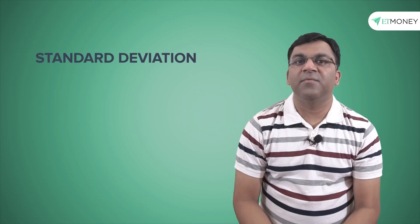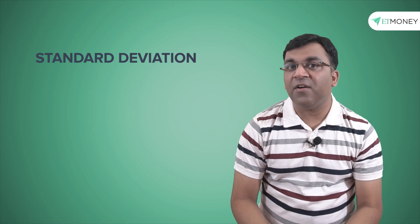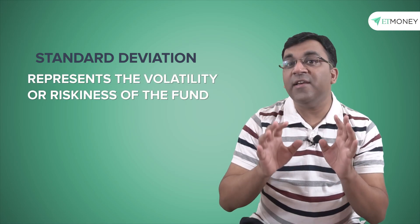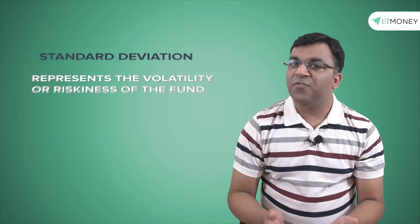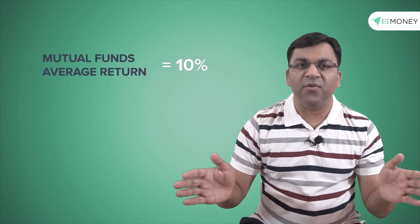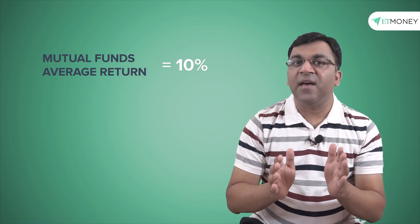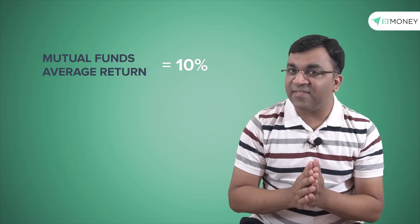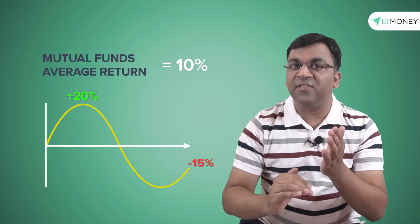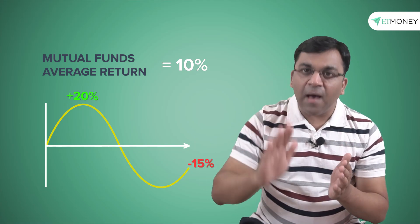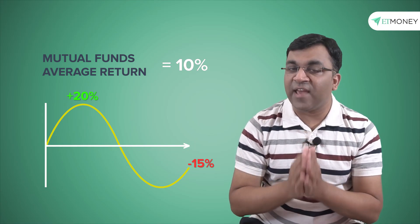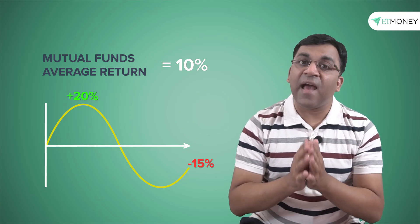The standard deviation measures the dispersion of data from its mean, and from a mutual fund perspective it represents the volatility or riskiness of the fund. For instance, let's say a mutual fund delivers 10% average returns over a period of time, but as expected this fund has had some good months and also some bad months with returns vacillating between plus 20% and minus 15%. This up and down trajectory of returns in the mutual fund NAV is what standard deviation captures and presents as an analyzed number.